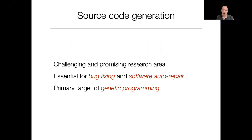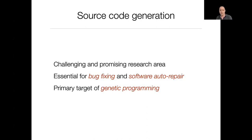Source code generation is considered a difficult, challenging, and very promising research area. Source code generation is essential for other research areas such as bug fixing and software repair. Furthermore, source code generation is really the primary target of genetic programming.